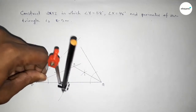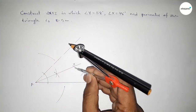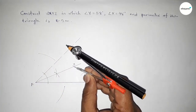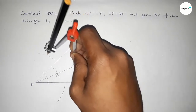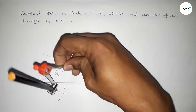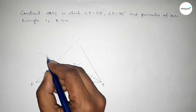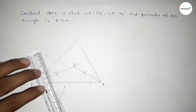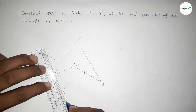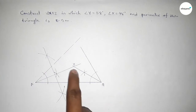Now we have to bisect the line PZ. Putting the compass at P and taking greater than half of PZ, drawing an arc. With the same length, putting the compass at Z and cutting here. Both curves intersect at two points. Joining this line to get the perpendicular bisector of PZ.